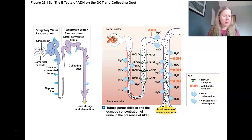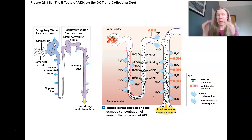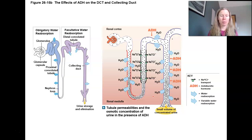At the collecting duct, we reabsorb sodium under aldosterone and reabsorb water under antidiuretic hormone. We also do acid-base balance here: reabsorbing hydrogen or bicarbonate depending on the body's needs. We also reabsorb urea — it stays in the peritubular fluid and becomes part of the concentration gradient. There is also secretion at the collecting duct: if pH is too low, we actively secrete hydrogen into the filtrate and reabsorb bicarbonate; if pH is too high, we secrete bicarbonate into the filtrate and reabsorb hydrogen. Tons of hormones act at this part.